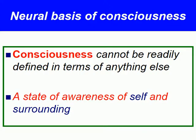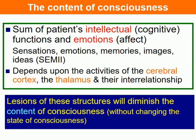Neural basis of consciousness. Consciousness cannot be readily defined in terms of anything else — it is a state of awareness of self and surrounding. The content of consciousness includes a patient's intellectual, cognitive function and affective state: sensation, emotion, memories, imagination, and ideas. It depends on the activity of the cerebral cortex, thalamus and their interrelationship. Lesions of these structures will diminish the content of consciousness.